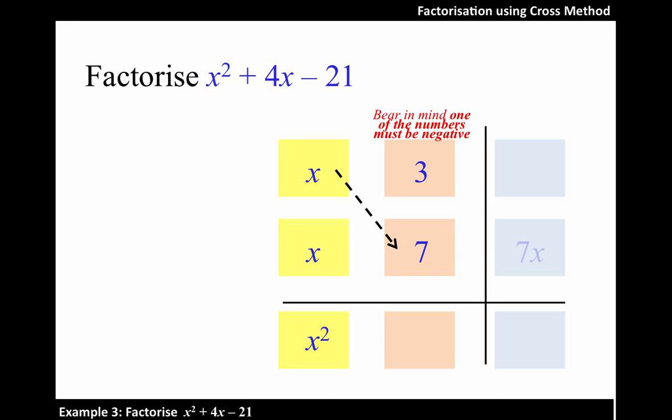Let's do the cross multiplication. We get 7x and 3x. Now, the sum of these two terms should give us positive 4x, as given in the original expression.